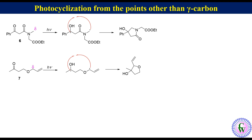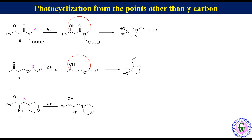For example, compound 8. There are both beta and delta hydrogens, but upon irradiation the beta proton gets abstracted to produce a 1,3-diradical which cyclizes to produce a cyclopropanol derivative.